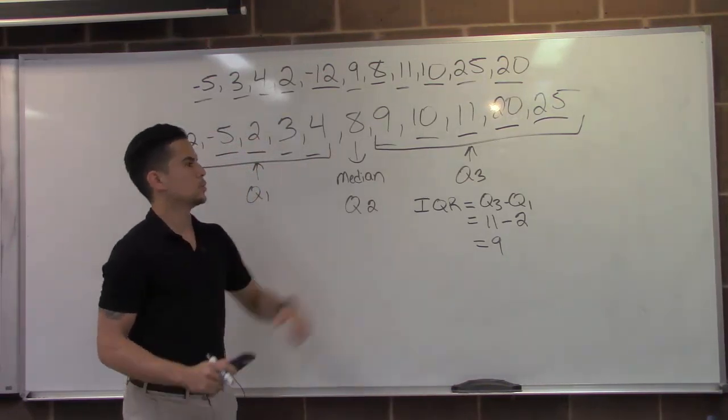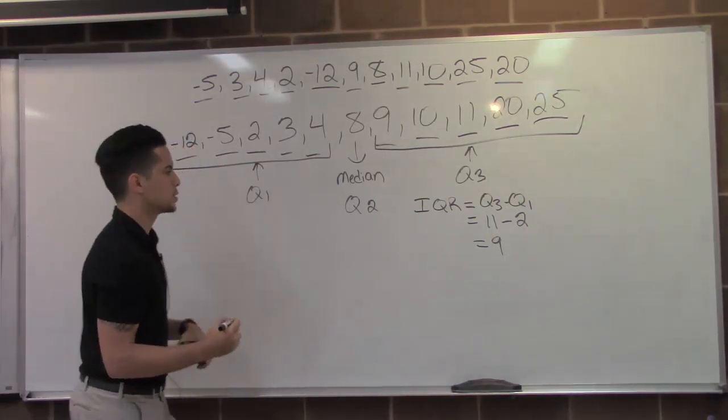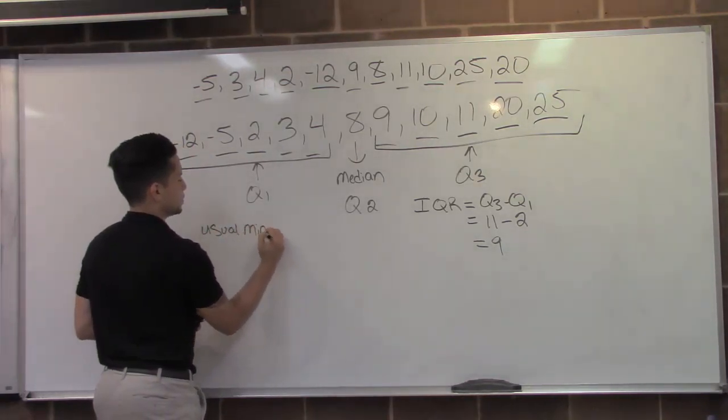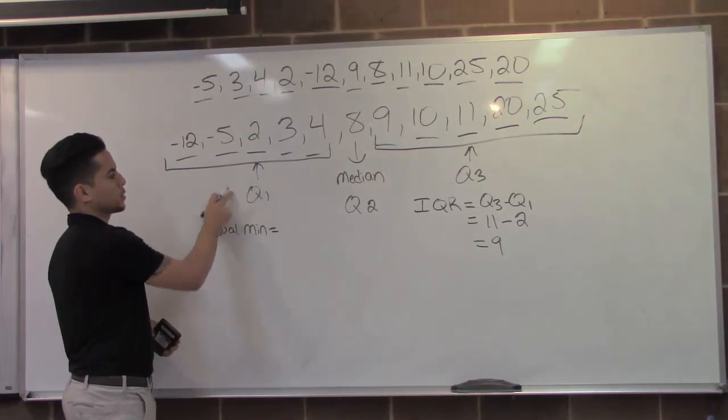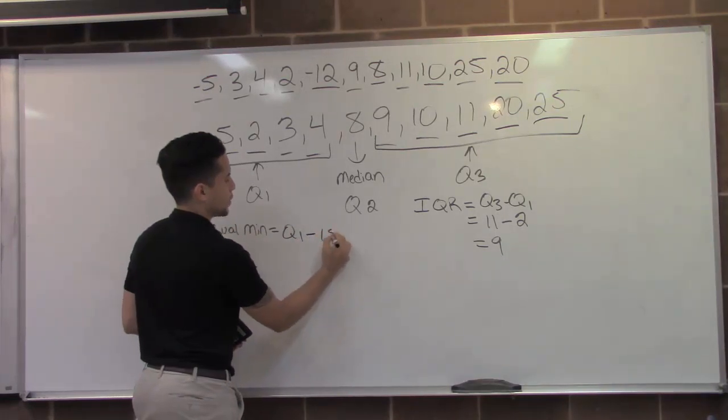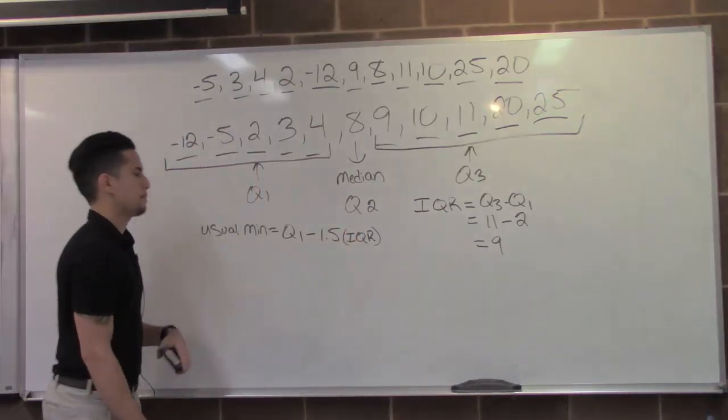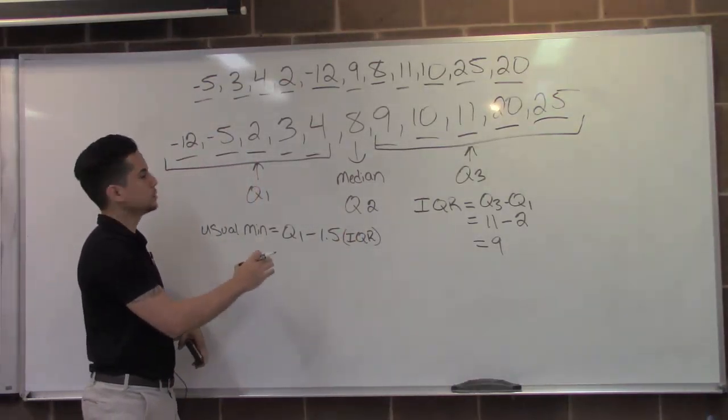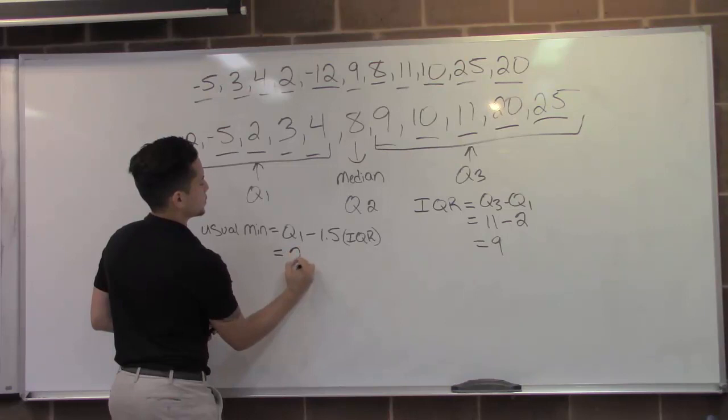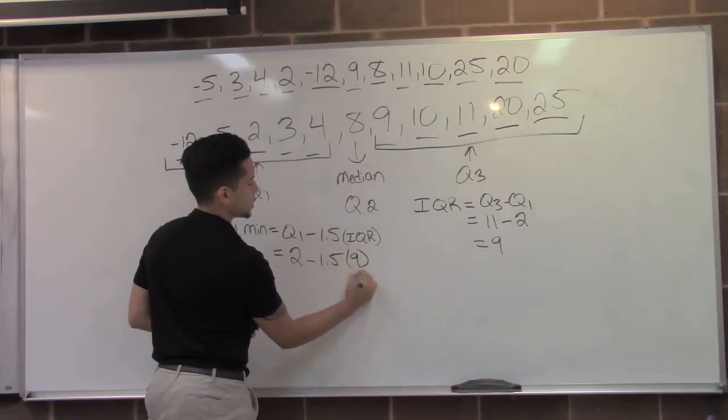From there, we're going to try to find our usual min and usual max. To do that, we've got to use this equation right here, it's usual min. And this would be Q1 minus 1.5 times the interquartile range. So all we've got to do from here is plug in two and nine, so the two minus 1.5 times nine, which is our interquartile range.